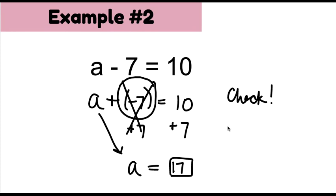Let's check it. I'm going to substitute 17 into my original equation. Add the opposite. 17 plus negative seven is 10. That checks out.